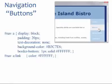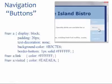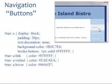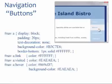The Link pseudo-class configures white text color for hyperlinks that have not yet been visited. The Visited pseudo-class configures gray text color for hyperlinks that have already been visited. The Hover pseudo-class configures medium blue text and a gray background color when the mouse pointer is over the anchor tag's block area.